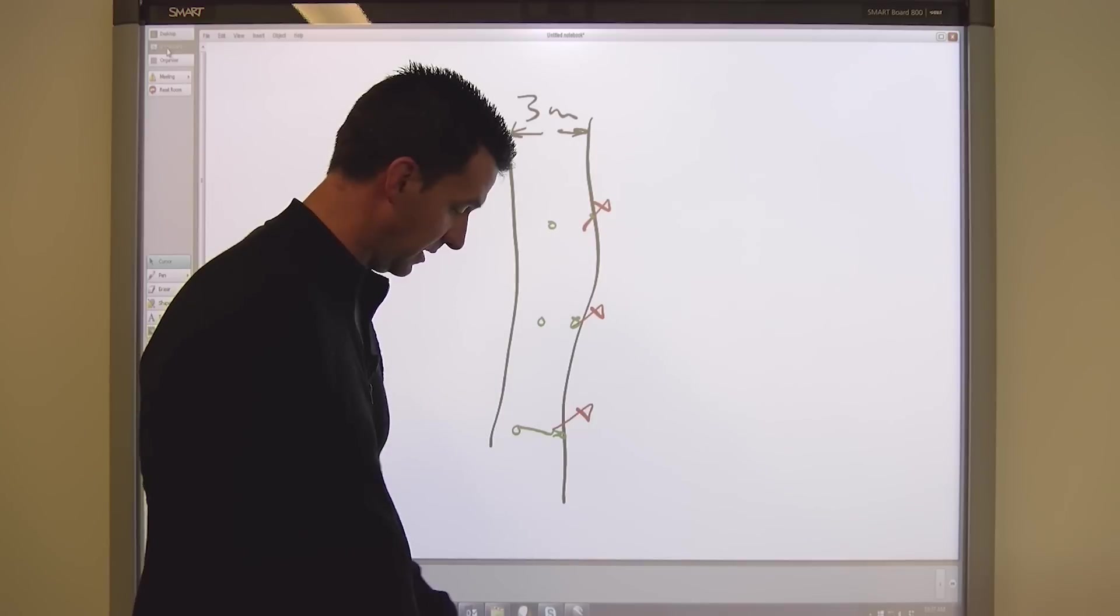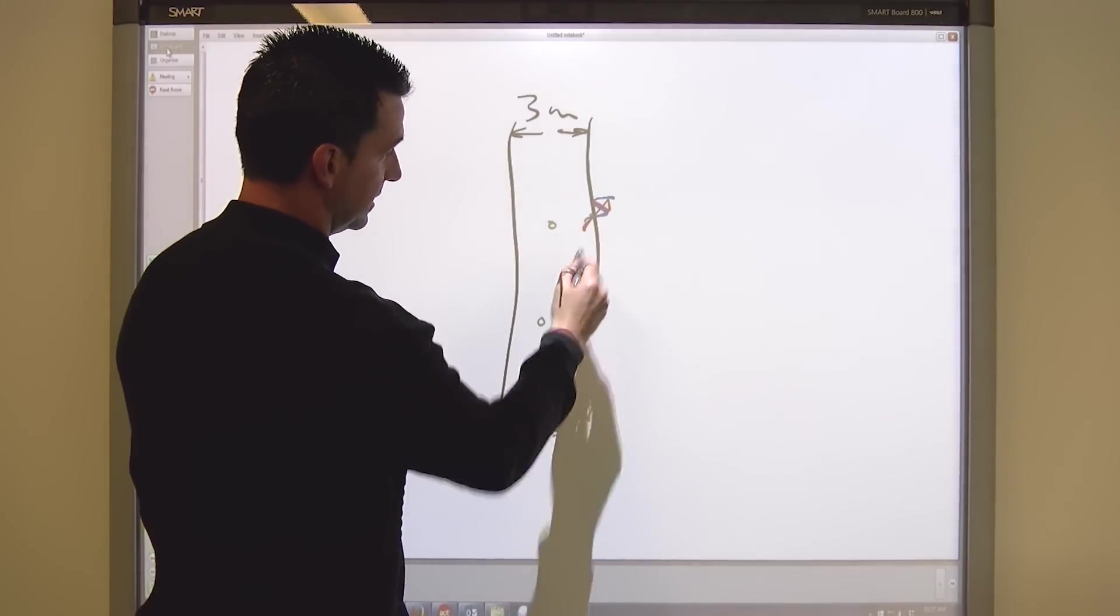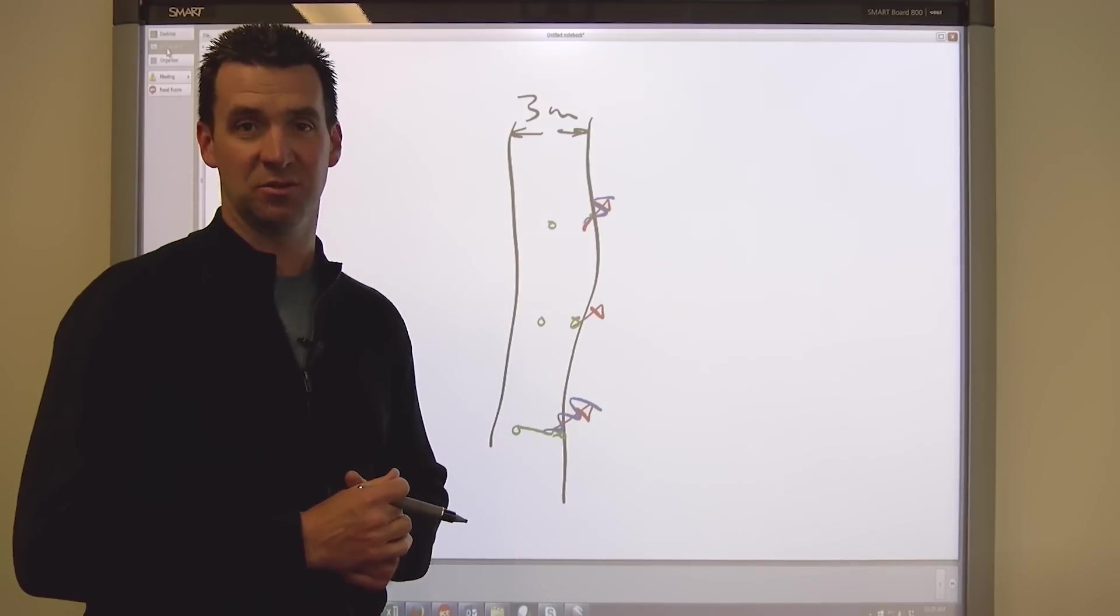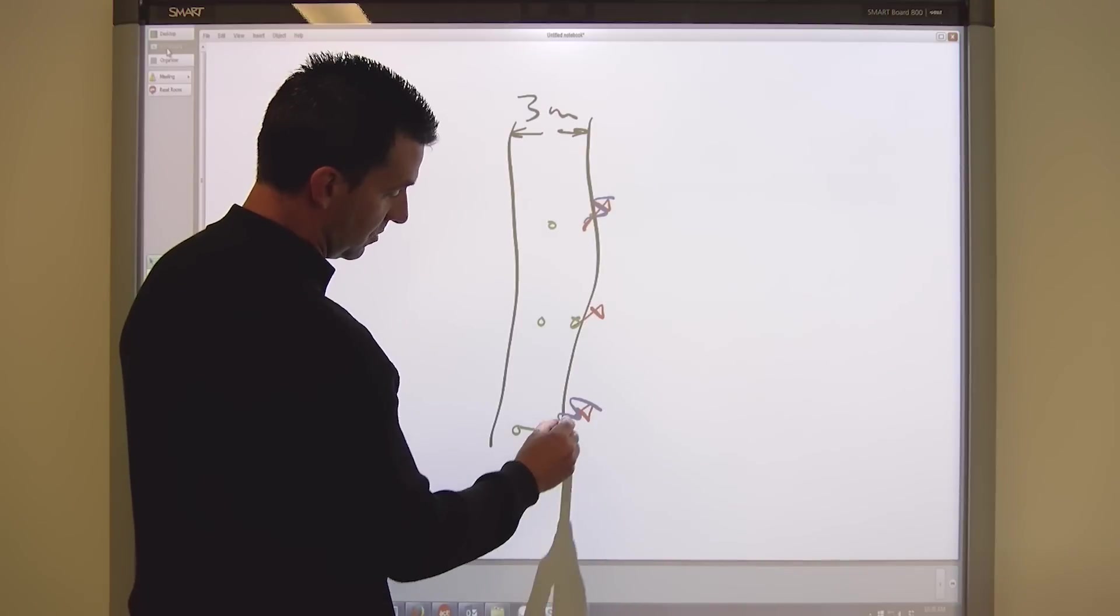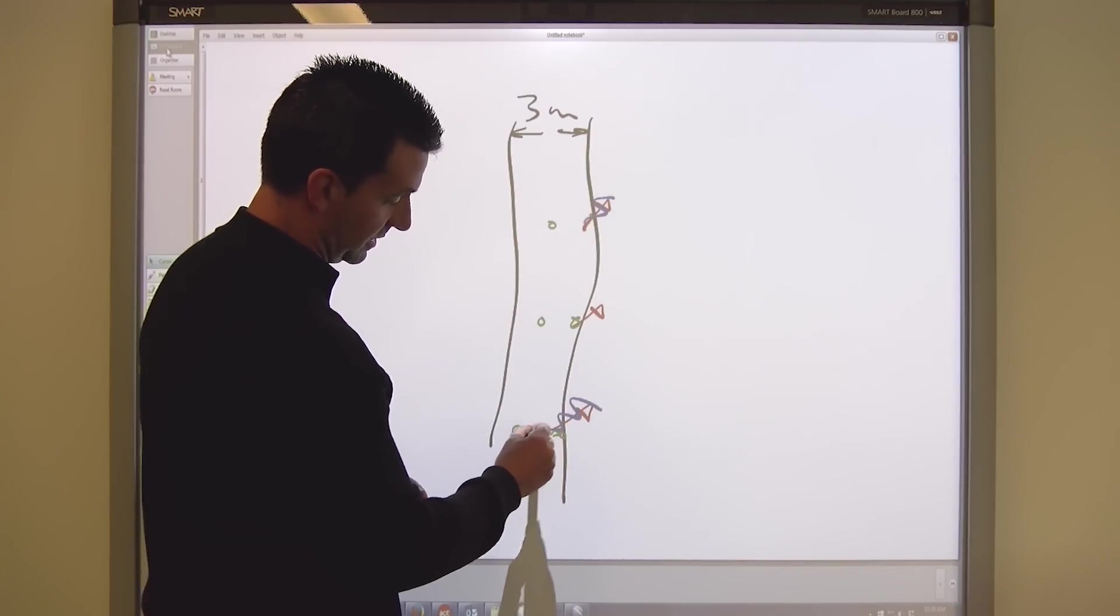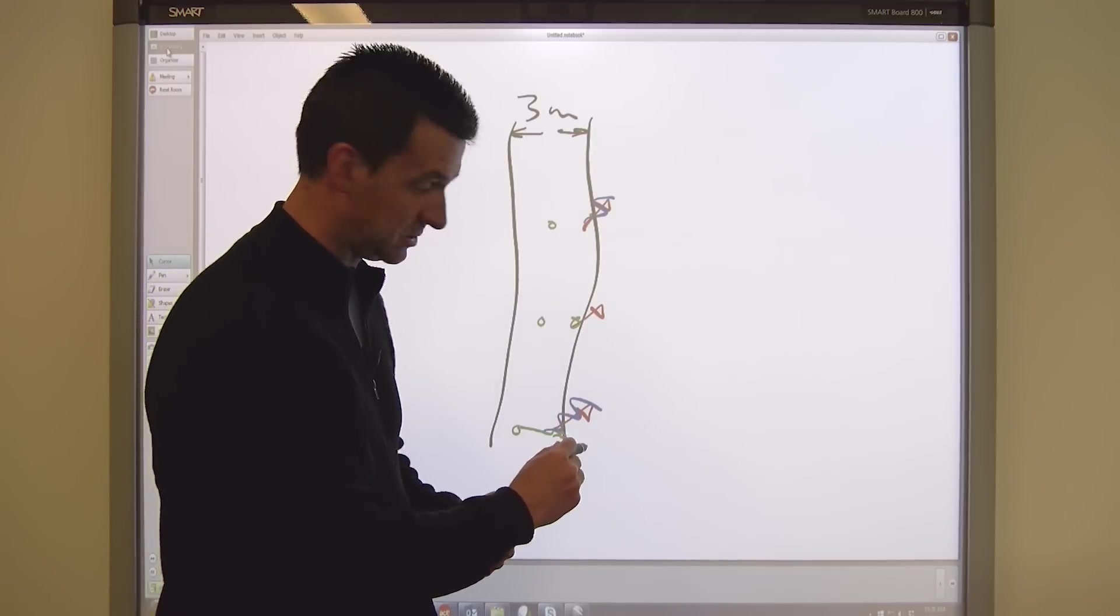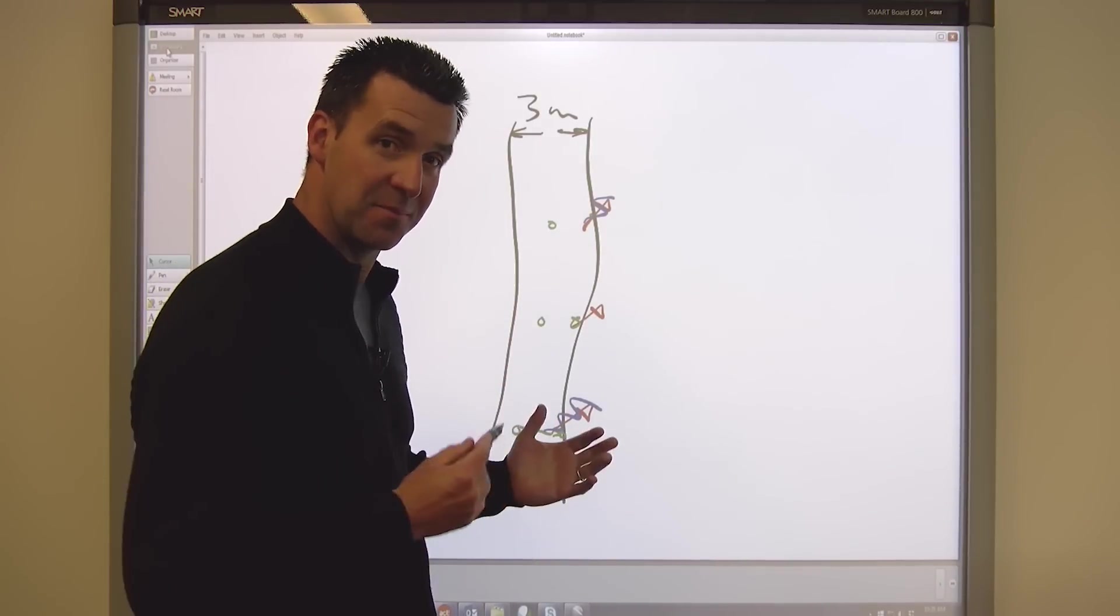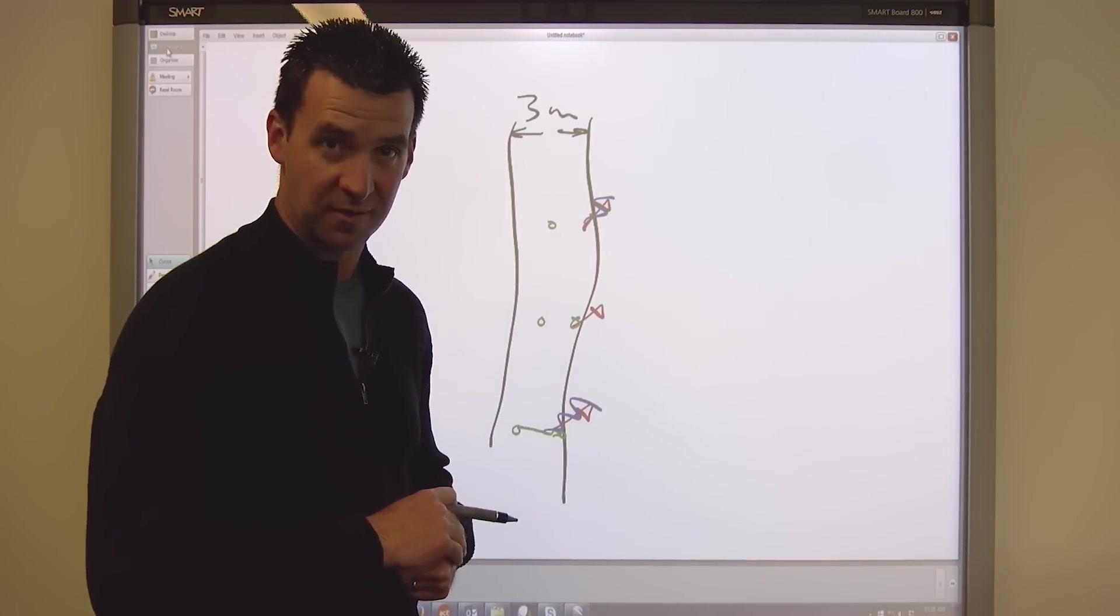There's a high degree of variability. The other thing that happens is sometimes these go missing. A cow comes along and eats them. Different things can happen and those markers can disappear. So even though there might be a high degree of precision in the original survey, the relationship of the marker to the survey position and the final position of the receiver may or may not be on the location where the surveyor recorded that position.